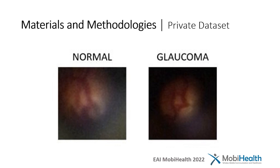For training, testing, and validation, the percentages were the same as for the public datasets. For training, 260 normal and 95 glaucoma images were used. For testing, 46 normal and 20 glaucoma images. And finally, for validation, 50 normal and 20 glaucoma images, making a percentage of about 70%, 15%, and 15% respectively.